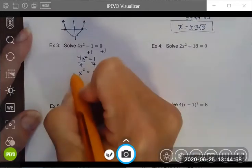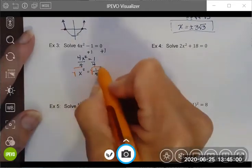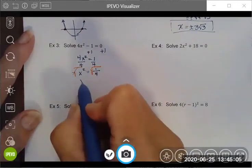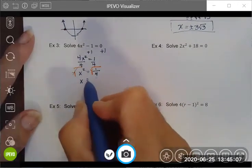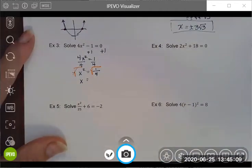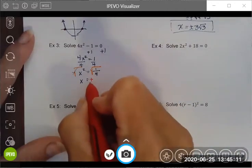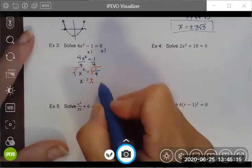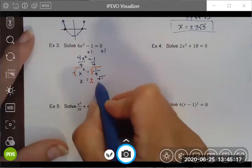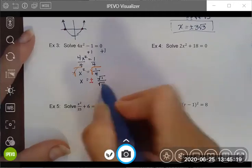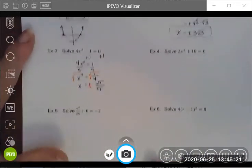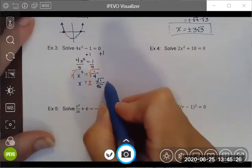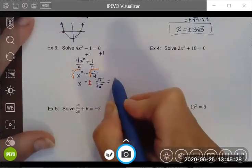At this point, I would take the square root of both sides and I can take the square root of a fraction, especially if both the numerator and the denominator are perfect squares. And in this case, they are. This is the square root of one-fourth, which is really the square root of one divided by the square root of four.